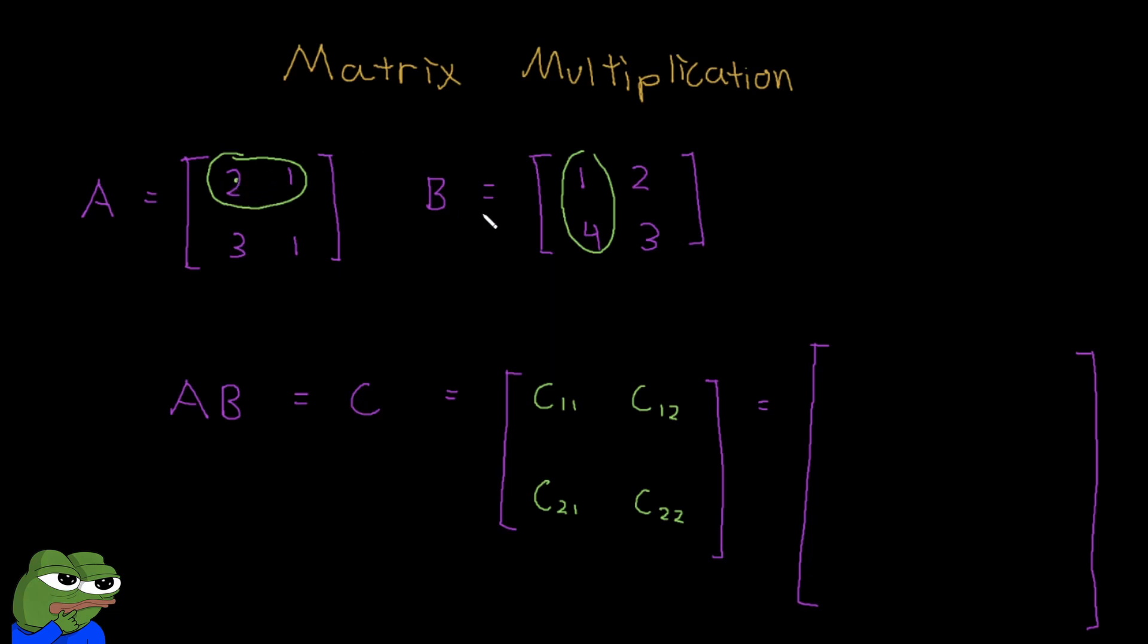Two times one. Now we add the next elements. So we move to the right for matrix A, so that would be one. Then we move down for matrix B, so that would be four. So plus one times four. And that would be our first element of our matrix.